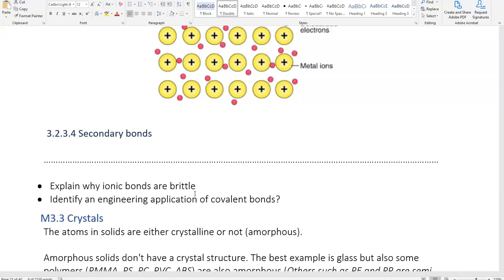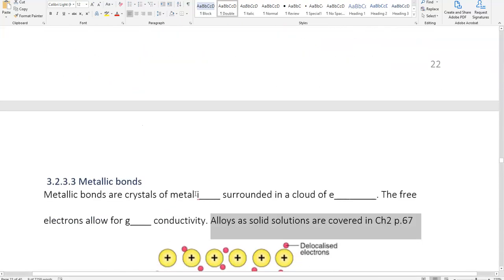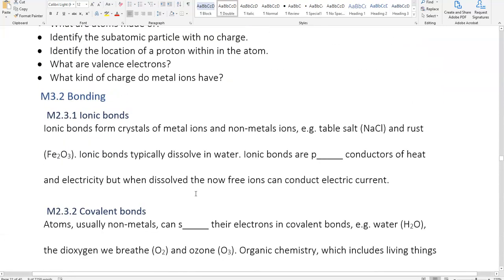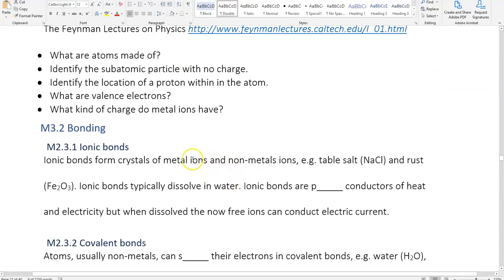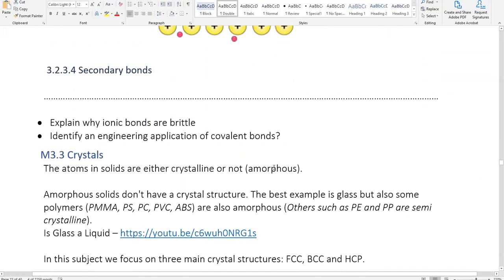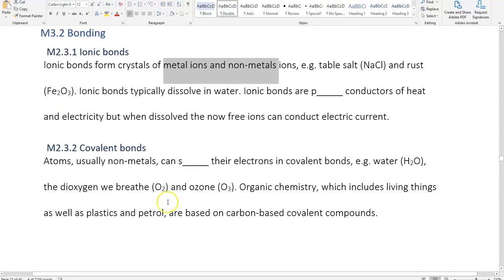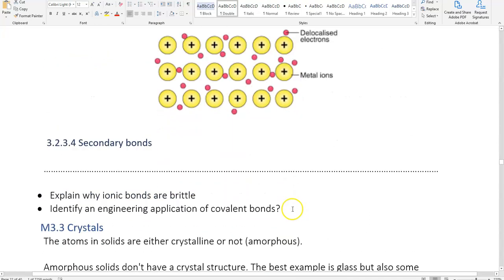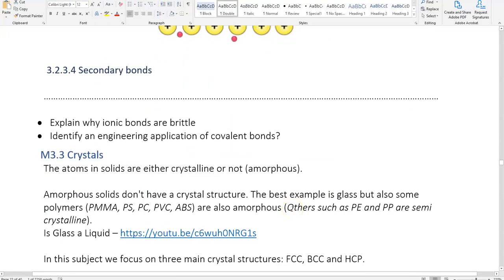Explain why ionic bonds are brittle. Well, because with ionic bonds, if their crystal is so rigid, that if it's disrupted, it shatters. That would be a good enough answer. Identify the engineering application of covalent bonds. That would be things like plastics and petrol. Polymers would be a better answer, but I will definitely accept plastics. Okay, that's it for this recording.